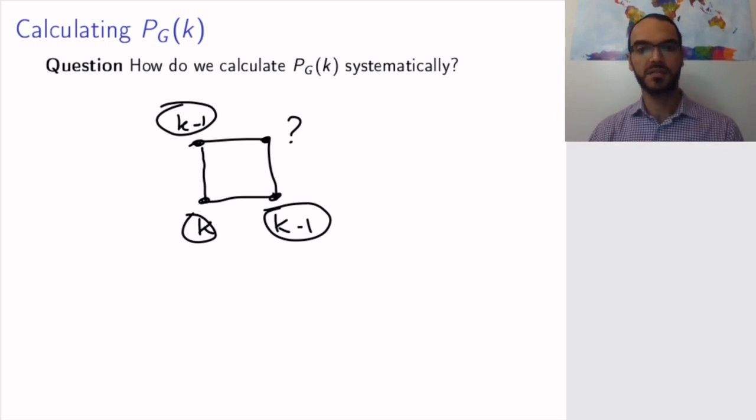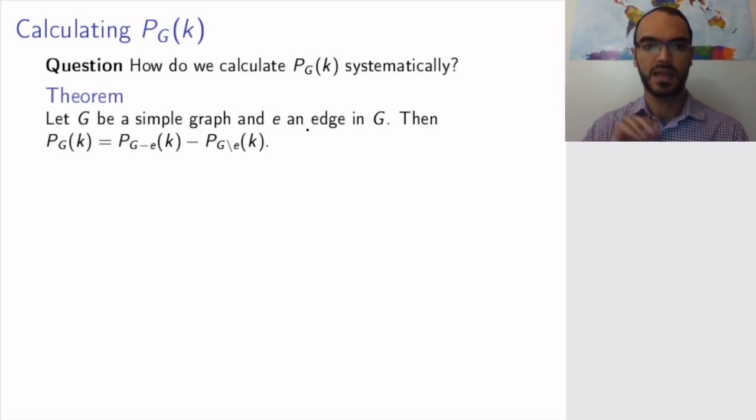If they have the same color, then only one color is forbidden. If they don't, then two colors are forbidden. So how do you measure all that? We need a systematic method to calculate the number of colorings of the graph and to help us with that is the following theorem.